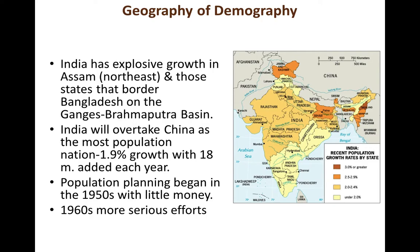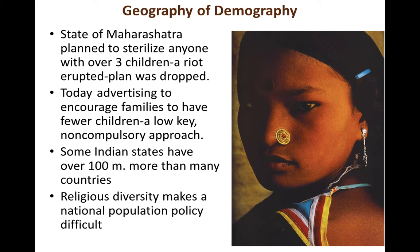In the 1950s India began planning around population concerns. By the 1960s there were serious efforts to control population growth. The state of Maharashtra planned to sterilize everyone with more than three children, but there was a riot and the plan was dropped. Today India uses advertising and propaganda to encourage smaller families. Some individual Indian states have populations over 100 million. Religious diversity — Hinduism and Buddhism — also shapes population policy depending on the community.